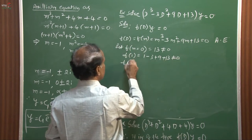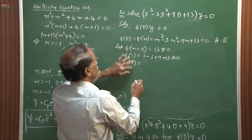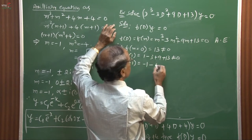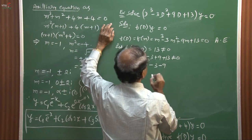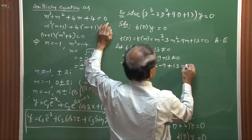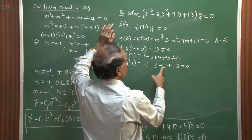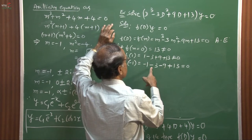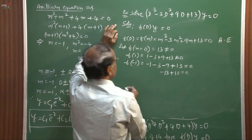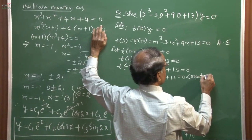Trying m = −1: f(−1) = −1 − 3(1) + 9(−1) + 13 = −1 − 3 − 9 + 13 = 0. The equation is satisfied! Therefore m = −1 is a root, meaning (m + 1) is a factor. Left side equals right side when m = −1.